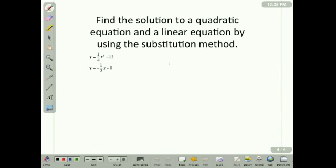Okay, so let's start the second problem. Again, we want to use substitution. We want to take this value and plug it into the y: negative 1 half x plus 0 equals 1 quarter x squared minus 12. I don't like dealing with the fractions, so I'm going to multiply everything out by 4. That will get rid of the 2, leaving negative 2x, and this 4 will cancel that 4, leaving me with 1x squared minus 48.